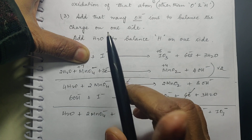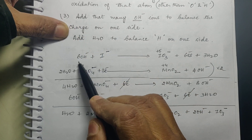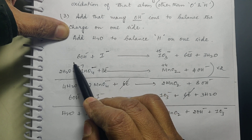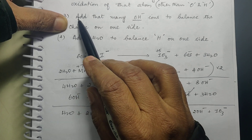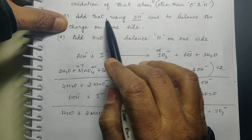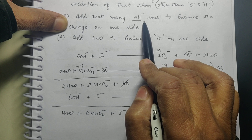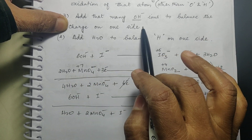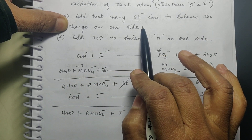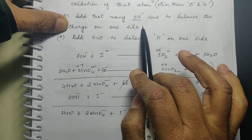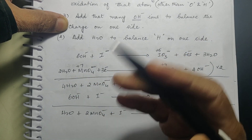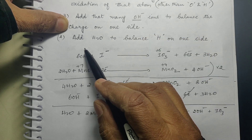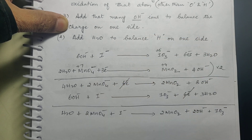You add those 6 more negative charges in the form of OH⁻. That's what I told you — add that many OH⁻ to balance the charge on one side. However many extra negative charges you need, you add them in the form of OH⁻.